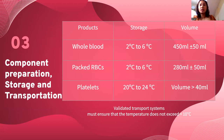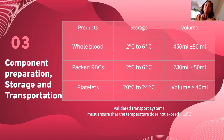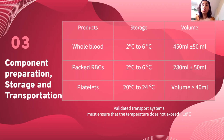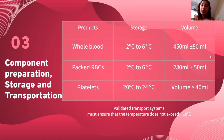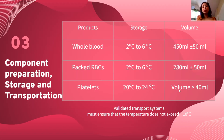Number three: component preparation, storage, and transportation. Each component has a specific temperature. Platelets are stored at room temperature, 20 to 24 degrees Celsius. Packed RBCs and whole blood are stored at 2 to 6 degrees Celsius. Fresh frozen plasma and cryoprecipitate have different temperatures — refer to your references. The standard volume for whole blood is around 450 ml, up to 500 ml. Packed red blood cells are about 280 ml, and platelets should be greater than 40 ml.